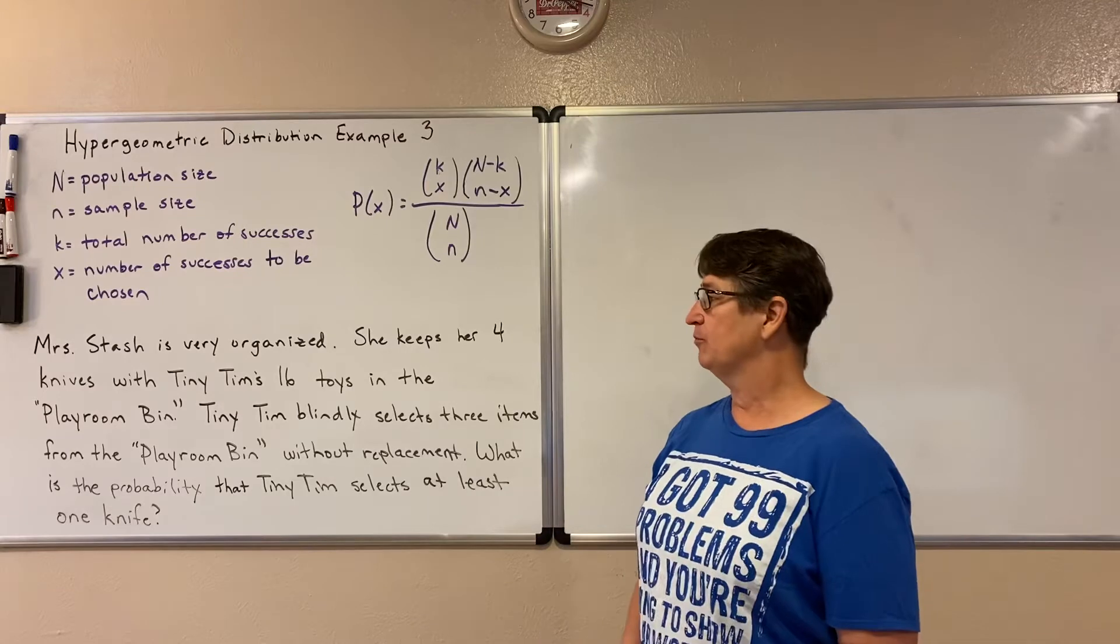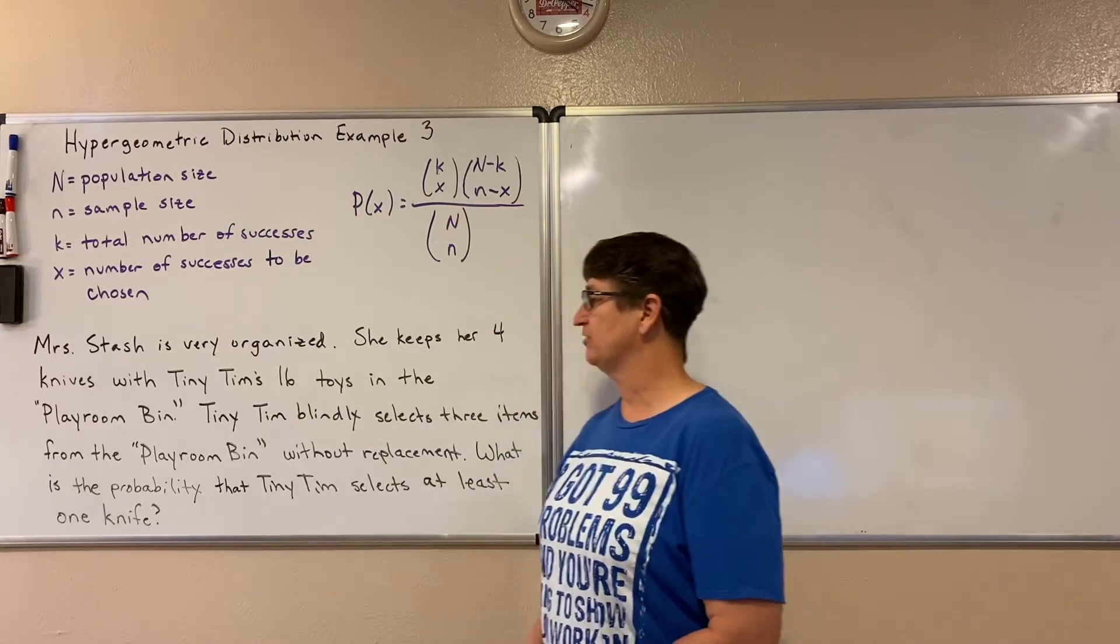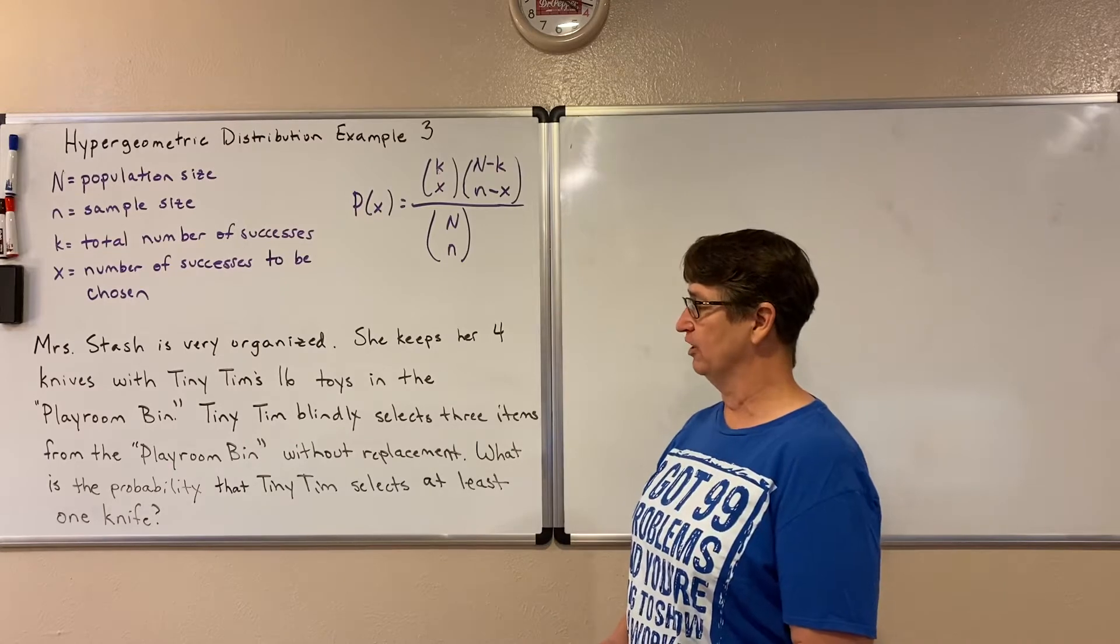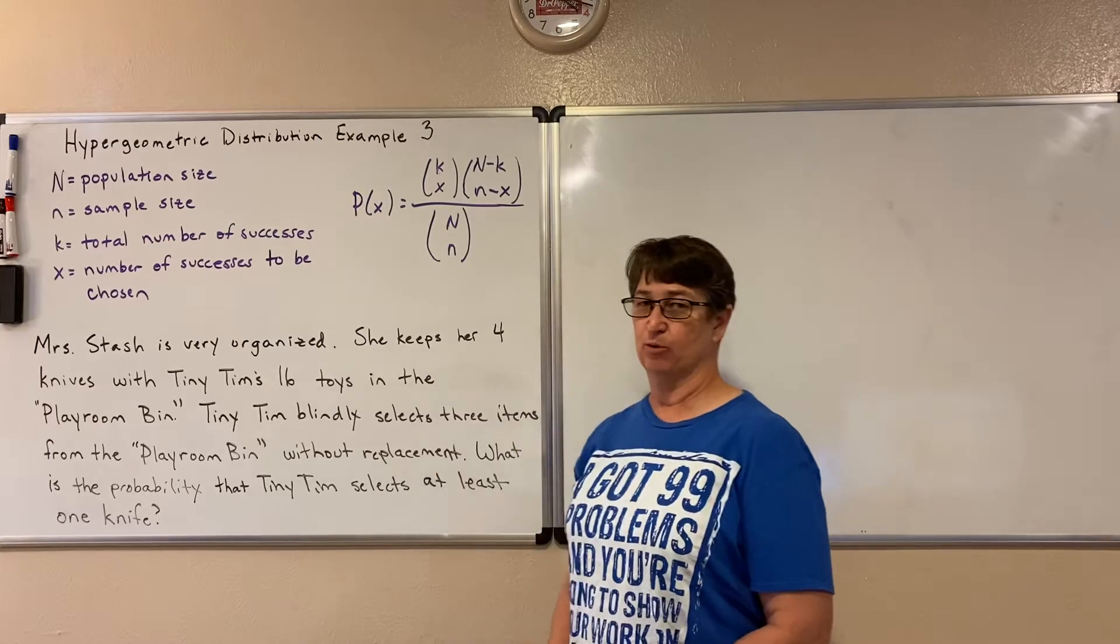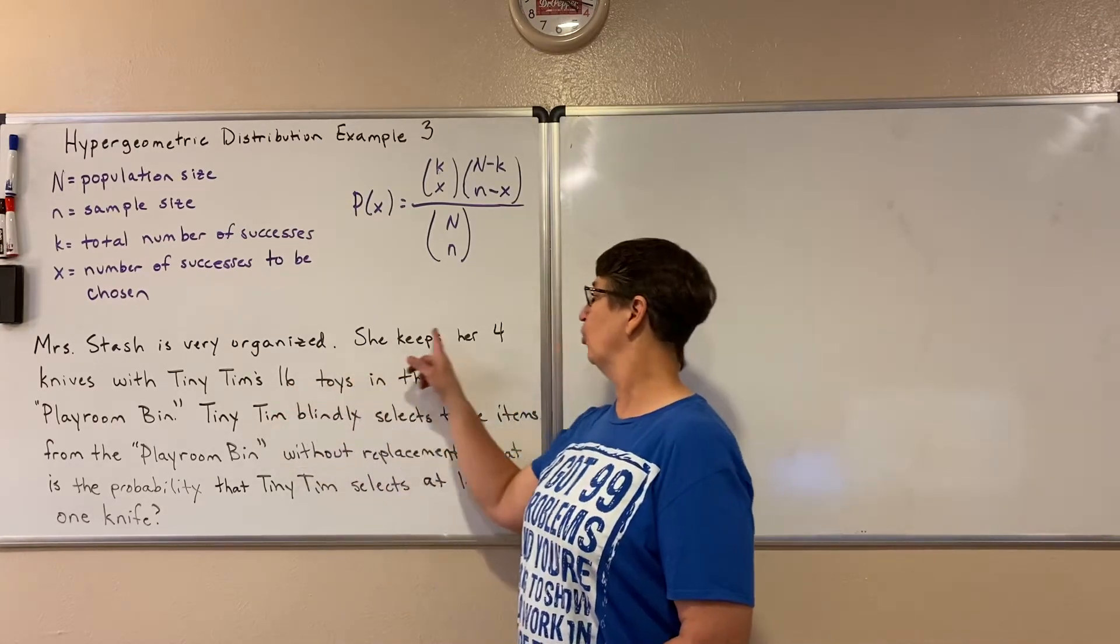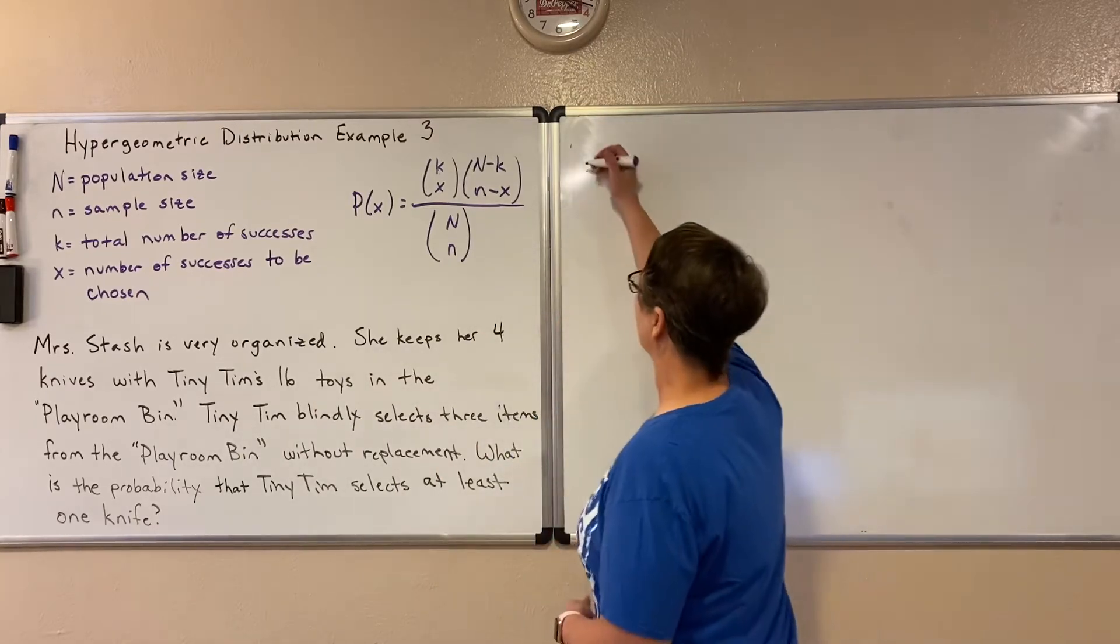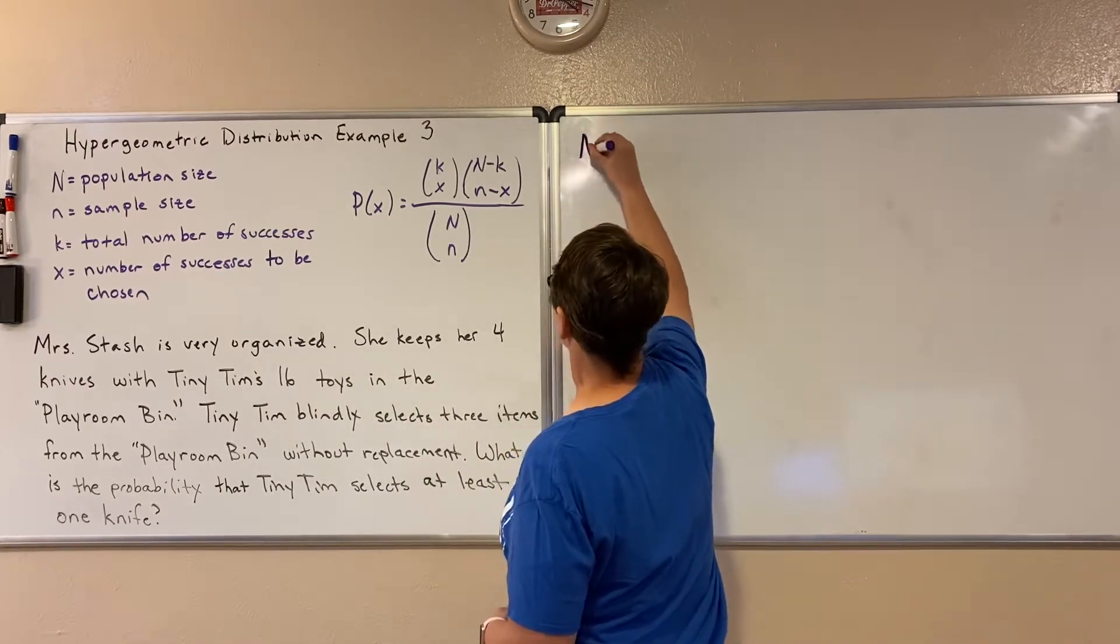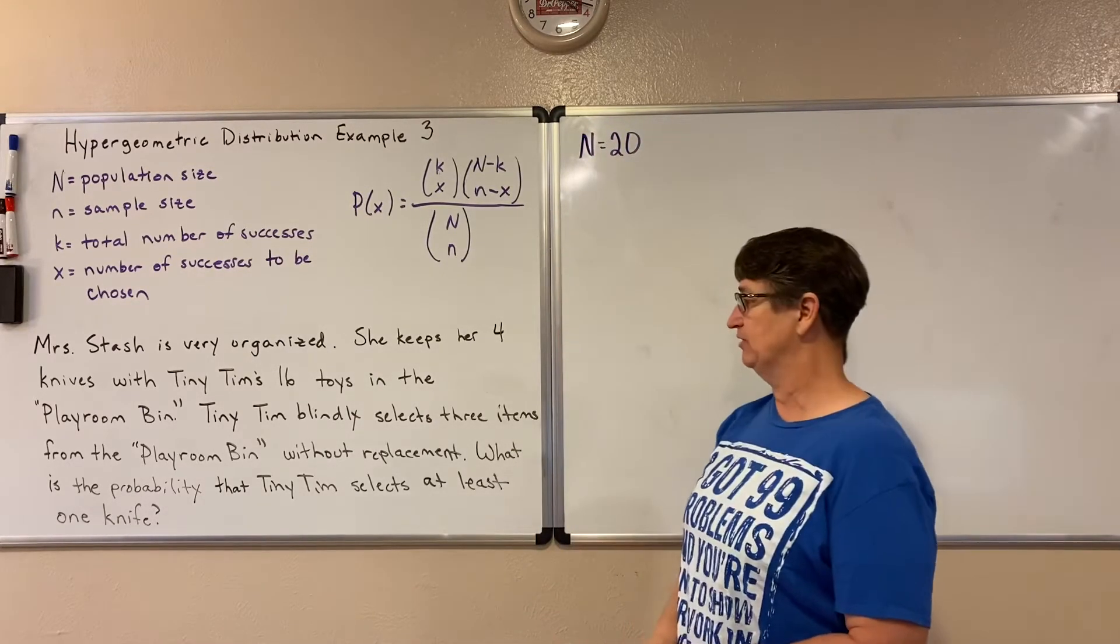Here we have an example. Mrs. Stash is very organized. She keeps her four knives with Tiny Tim's 16 toys in the playroom bin. So we have a population of items in the playroom bin. In fact, we have a total of 20 items in that population. So our N, in this example, will be 20. Our population size will be 20.